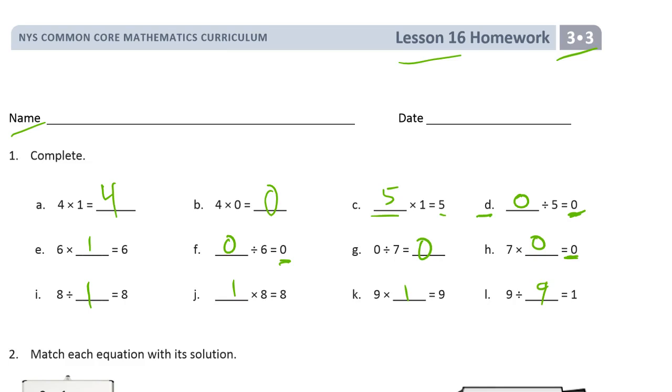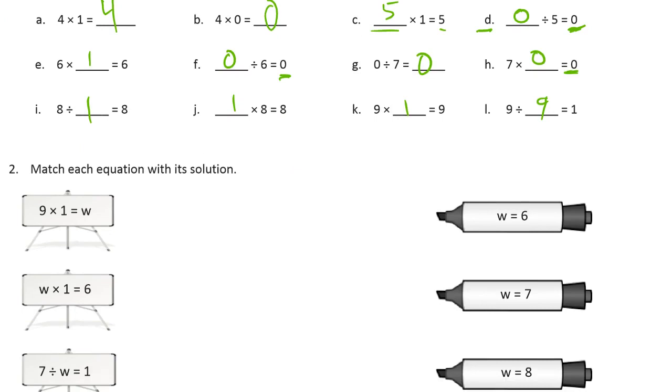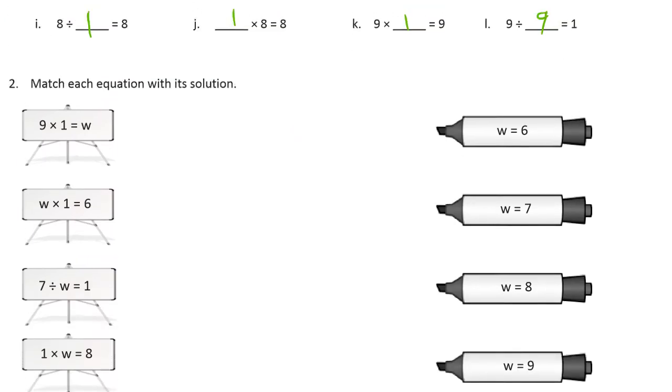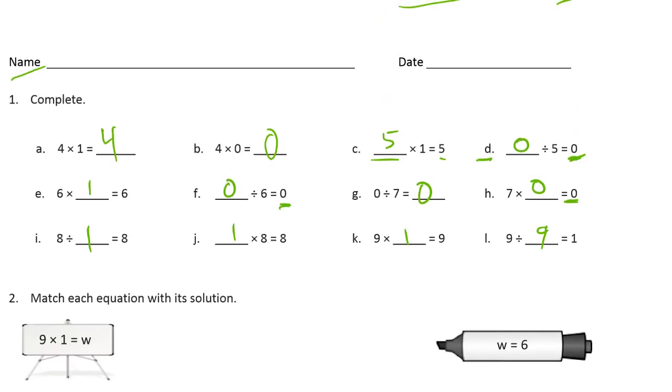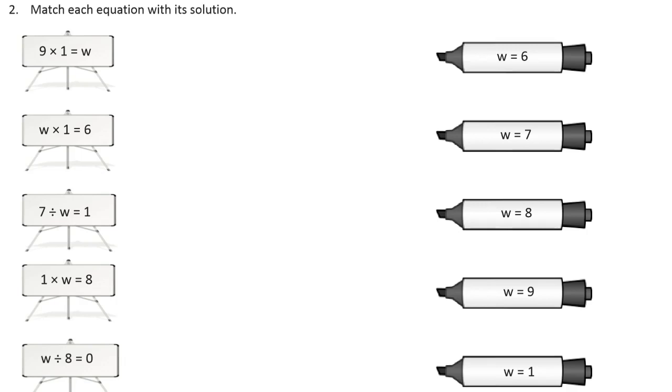So some of those answers are all single digit multiplication and division. But just slow down and take your time. And it'll be okay. They can be tricky, because you've got to pay attention to each one. And just think about the 0's, the 1's. We'll match each equation with its solution.